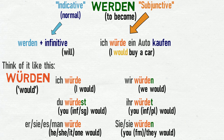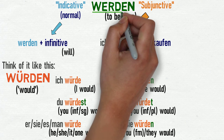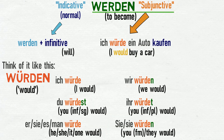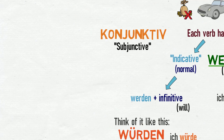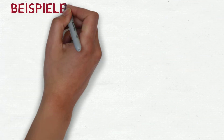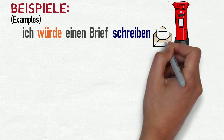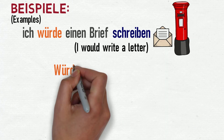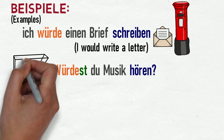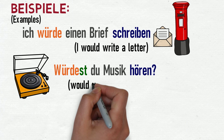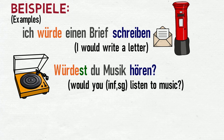This verb is actually the subjunctive form of werden, and so we can use it in the same way. If we put an infinitive on the end, we get 'would' sentences. So let's look at some examples. Ich würde einen Brief schreiben — I would write a letter. Würdest du Musik hören? — Would you (informal singular) listen to music?